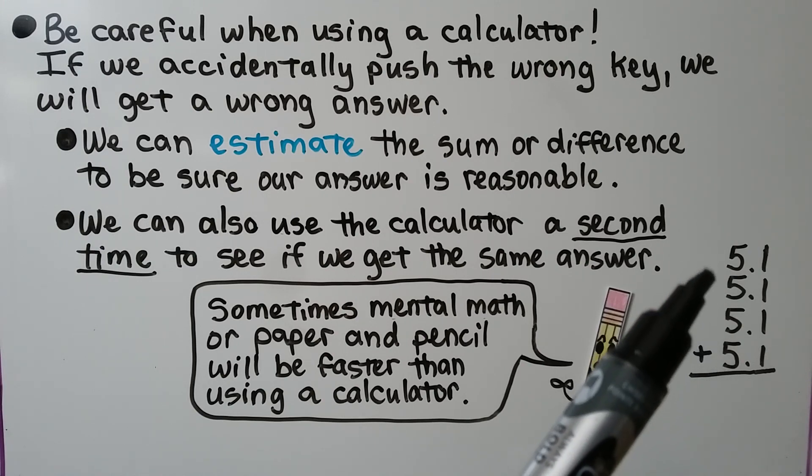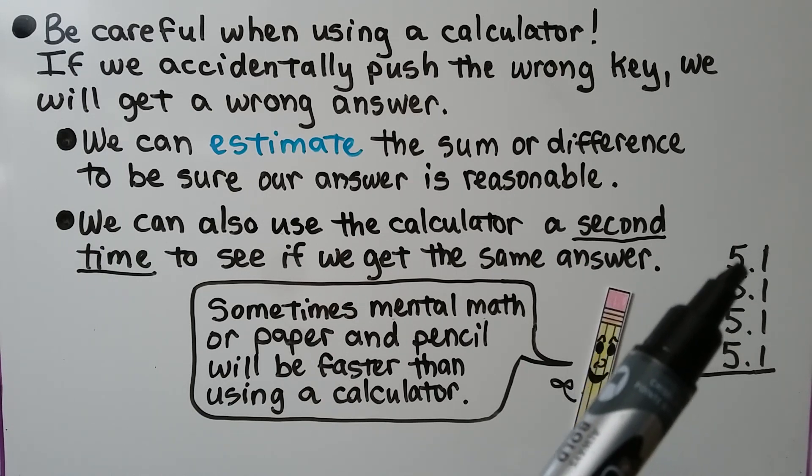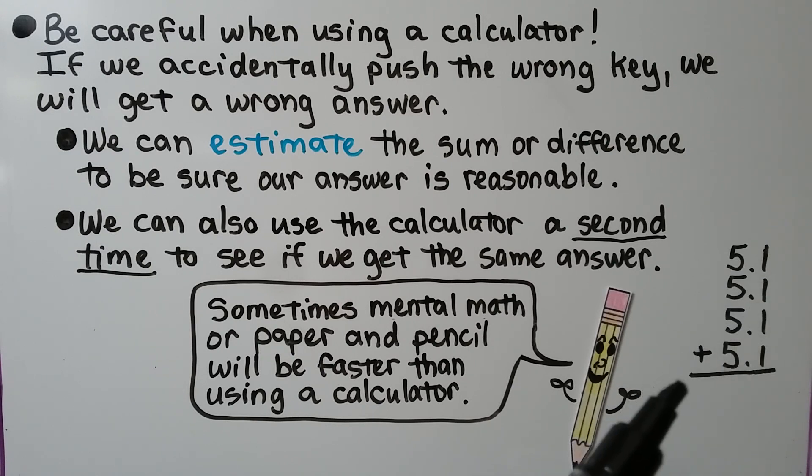And it would be slow to enter 5 with a decimal point and a 1 plus 5 and a decimal point and a 1 plus 5 and a decimal and a 1 plus doing it again and then having to hit equal. It would be much quicker, in this case, to do mental math. So calculators are not always the right way to go.